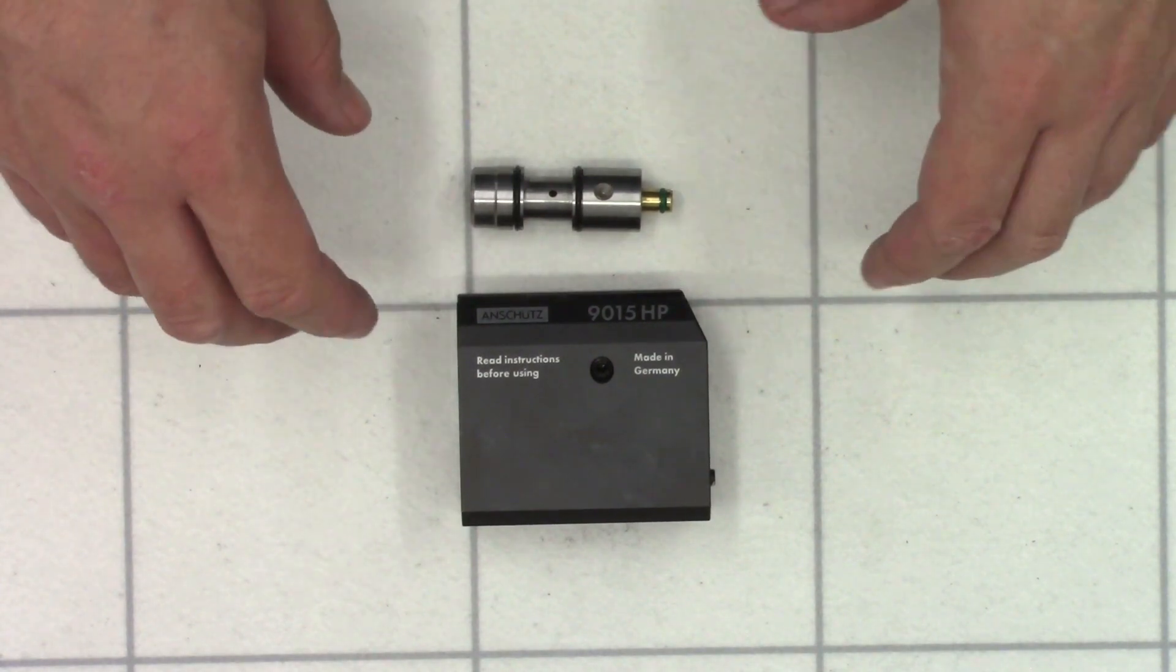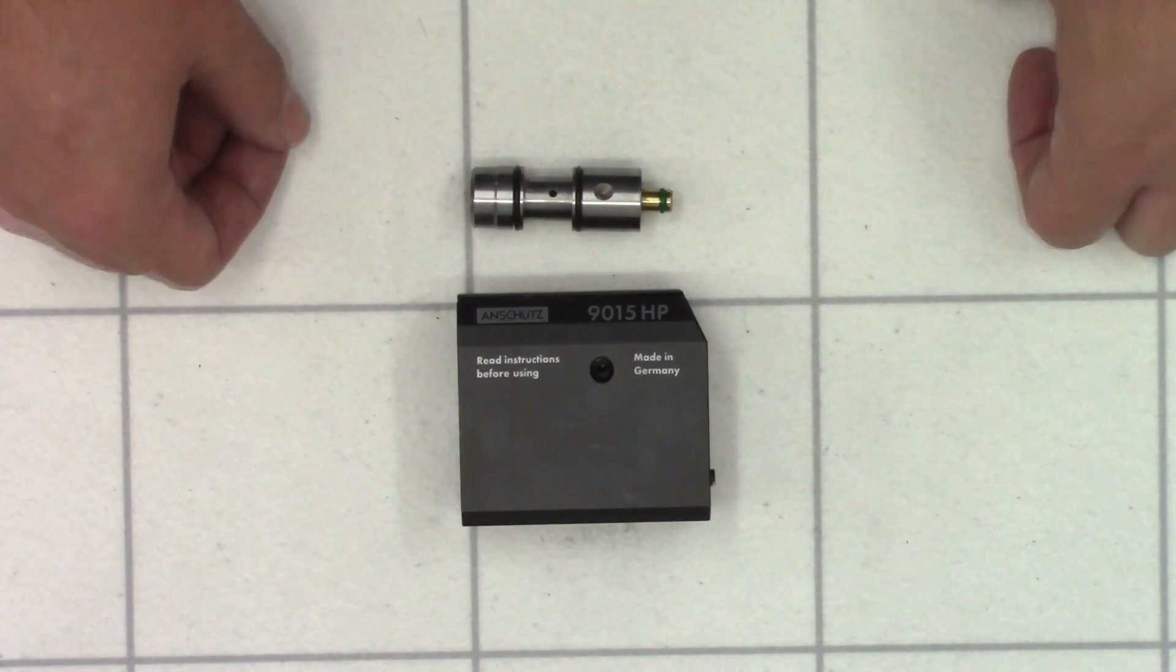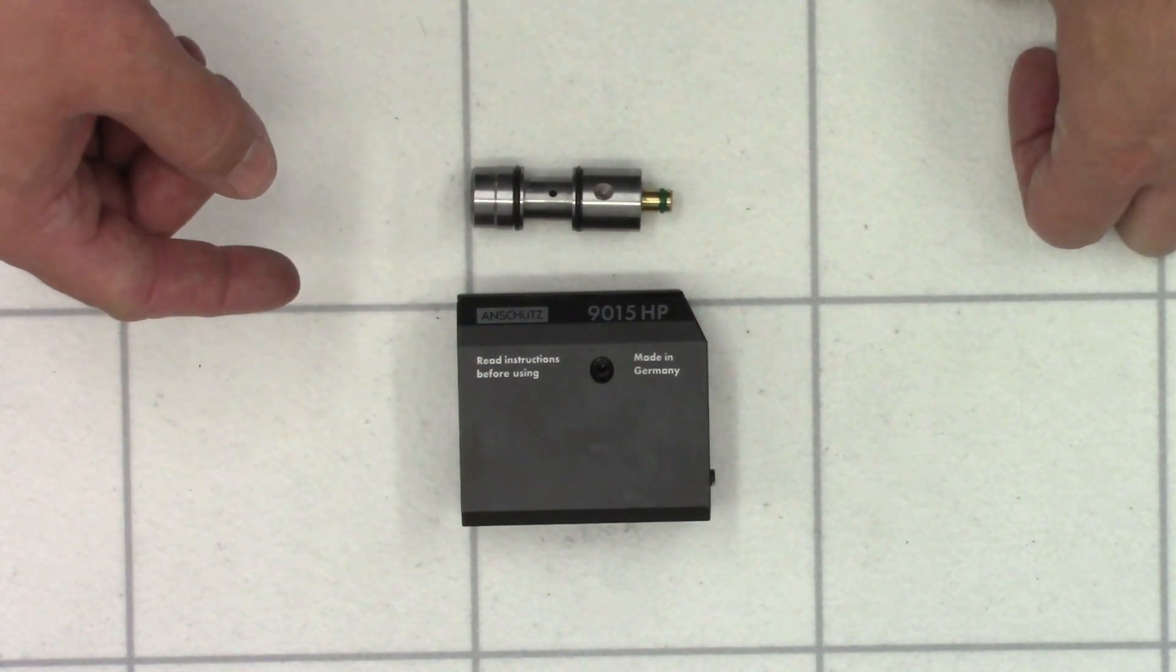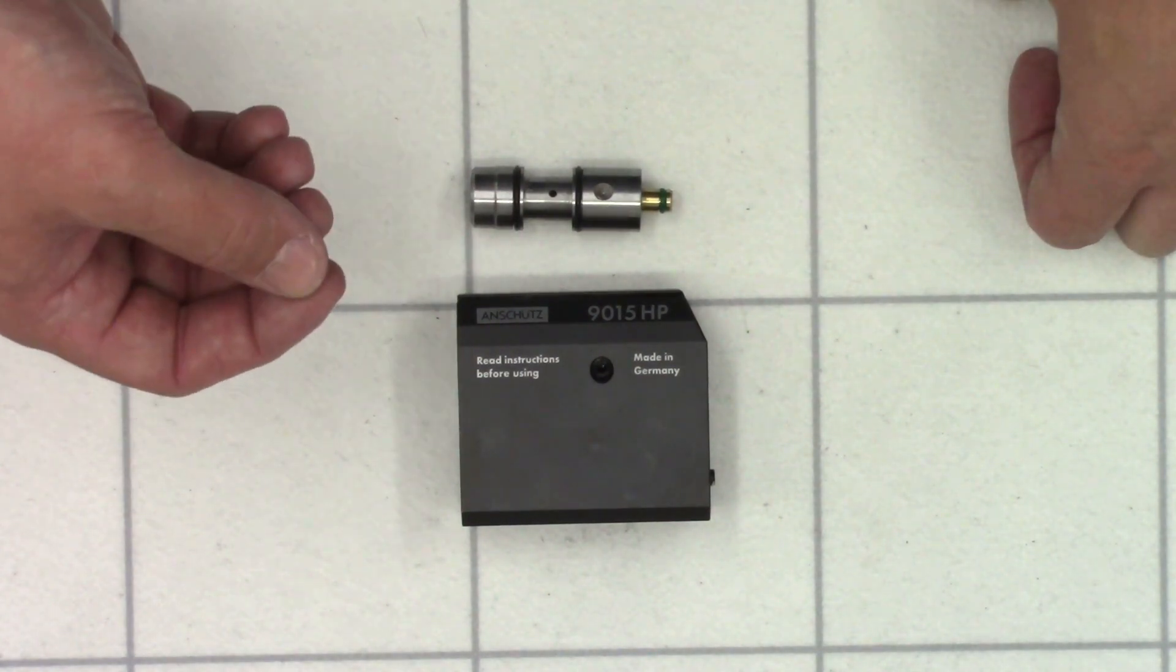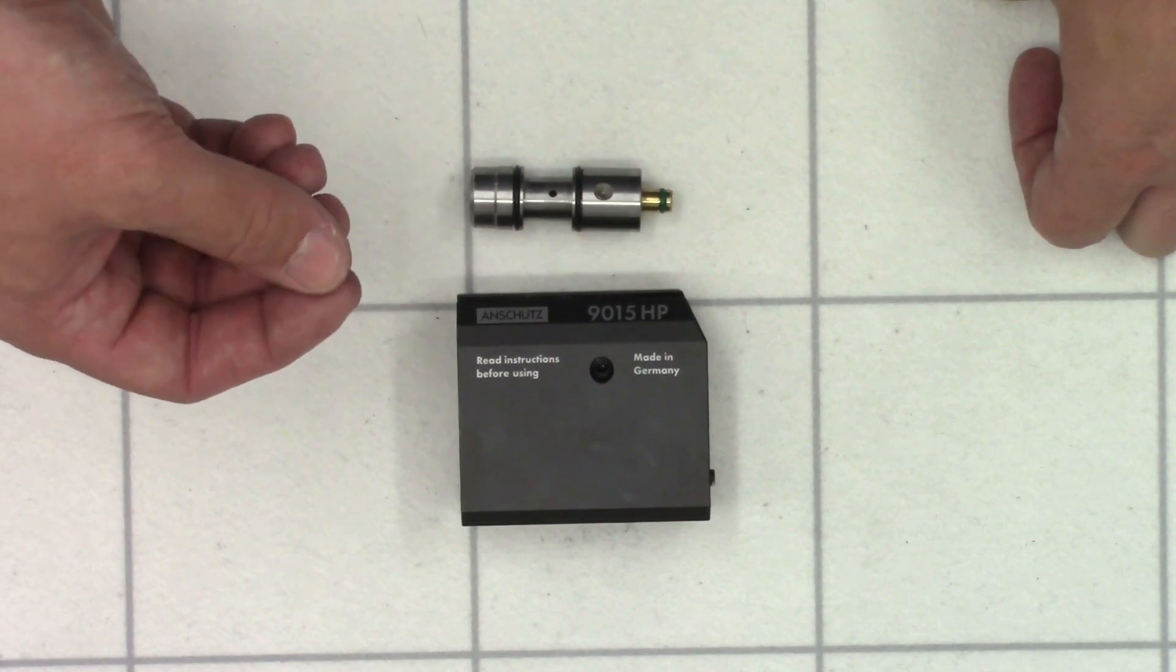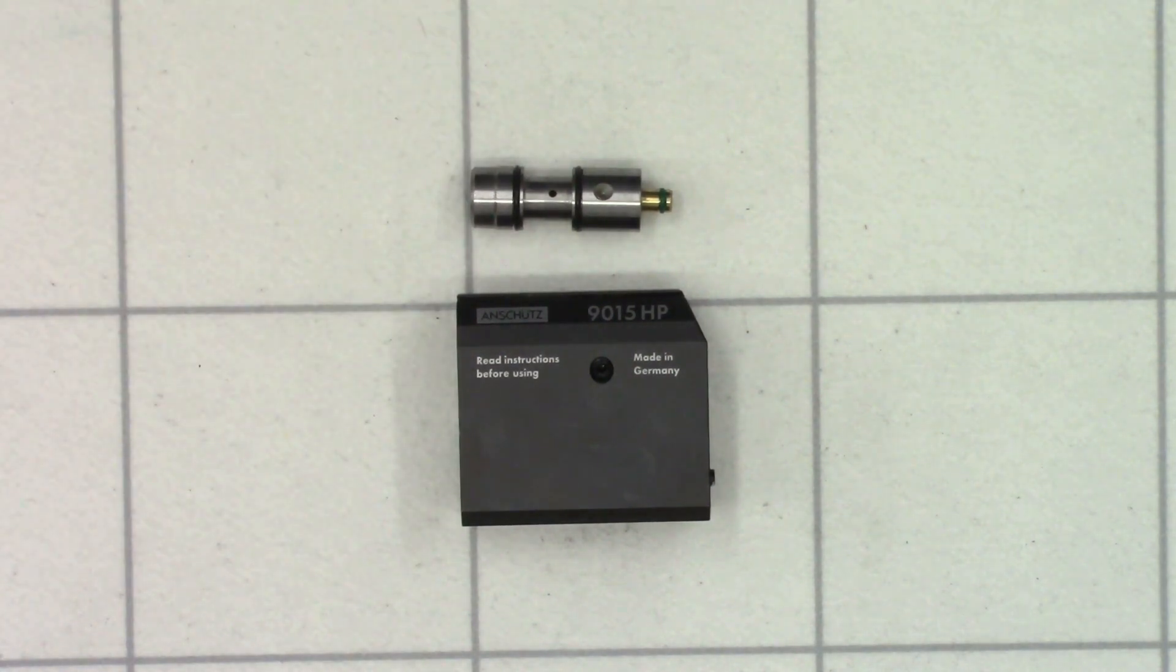And number two is in regards to the hammer spring itself. Because we will be able to undo the hammer spring a little, the rifle should feel a little more relaxed and with a little bit of luck, hopefully it should operate a little smoother.